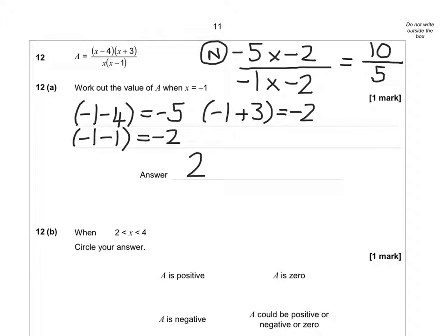For part B, it says when x is between 2 and 4, is the answer positive, 0, negative, or could it be either? The best way of doing this is thinking, well, x is between 2 and 4, so let me try it when x is 3. Like you did for A, let's work out the expression when x is 3. All of the brackets. I'm going to do 3 take away 4, which gives me -1. I'm going to do 3 plus 3, that's the second bracket, which gives me 6. The denominator bracket is 3 take away 1, which is 2. So I've worked out all the brackets.